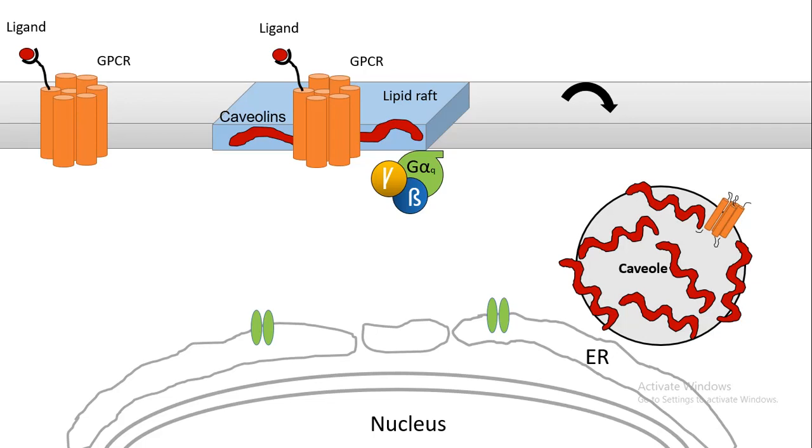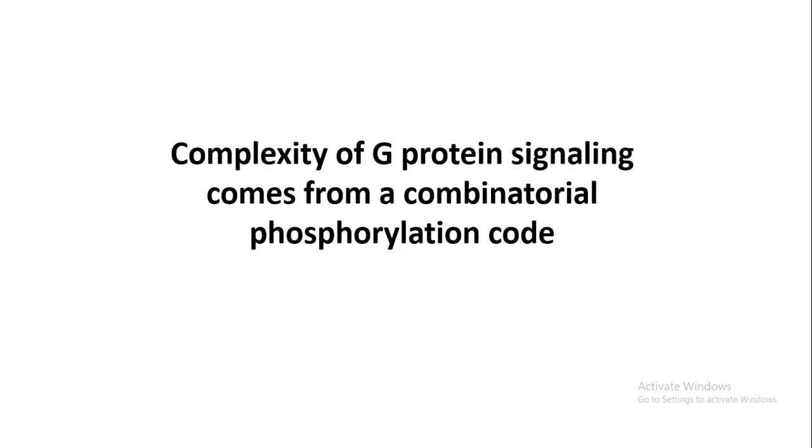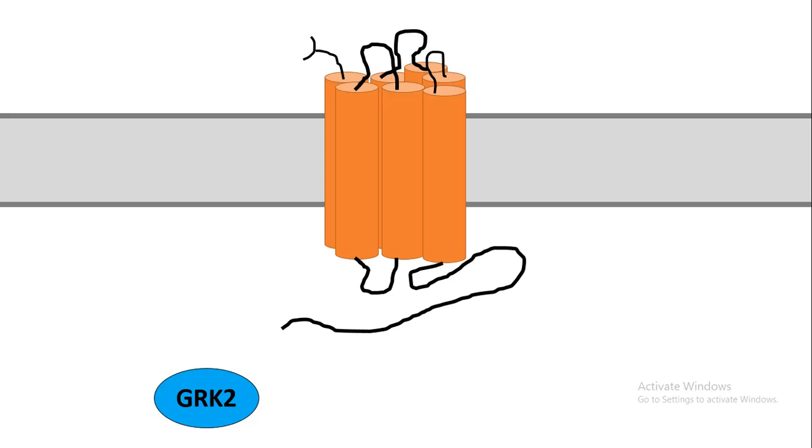The complexity of G protein signaling comes from a combinatorial phosphorylation code, and it is entirely dependent upon which kinases phosphorylate which residue of the G protein. For example, GRK2 phosphorylates specific serine residues on the GPCR C-terminal domain.